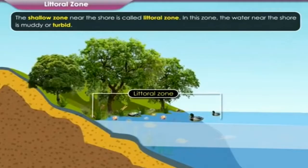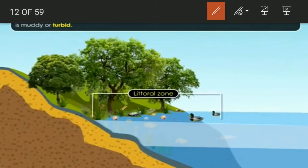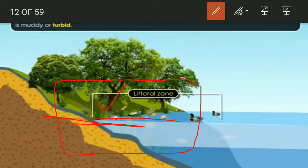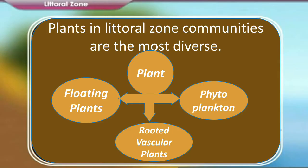The first one is the littoral zone. The shallow zone near the shore is called the littoral zone. The water in this zone is muddy or turbid as land mixes with the water. This topmost zone at the edge of the water body is home to the most diverse communities of plants.